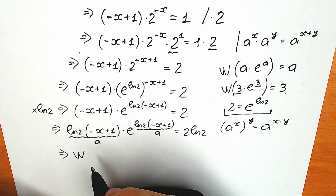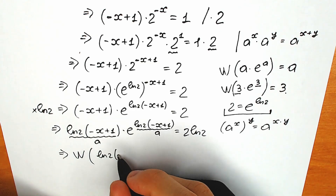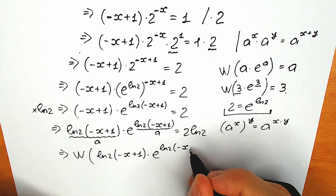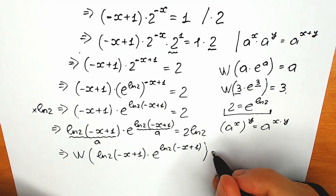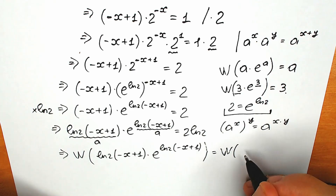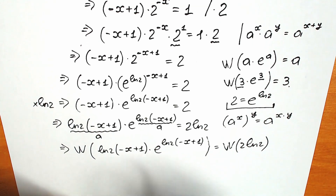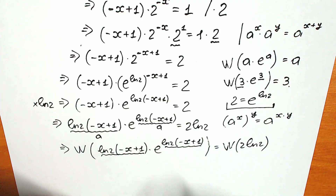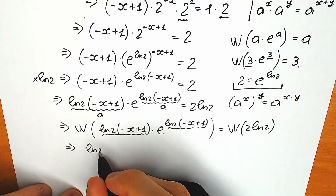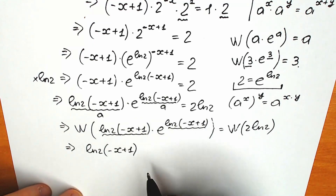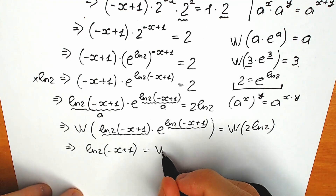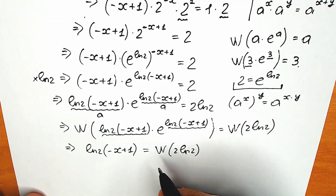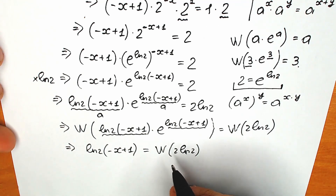Let's apply the Lambert W function. Lambert W of [ln2 · (minus x plus 1) · e to the power (ln2 · (minus x plus 1))] equals Lambert W of (2 · ln2). Since we have the structure a times e to the power a, we can get rid of everything on the left and we have only our a. So the left side becomes ln2 · (minus x plus 1), and the right side is Lambert W(2 · ln2). This is a constant — don't be scared about this expression.